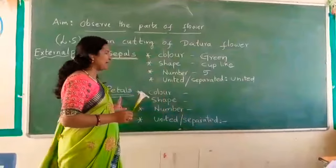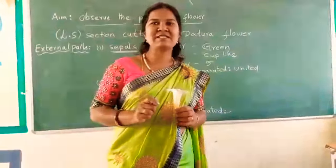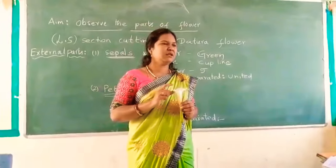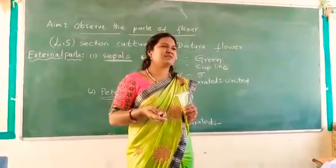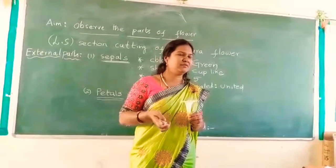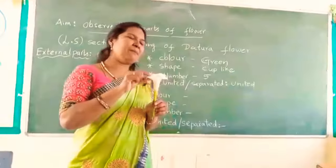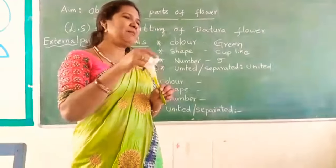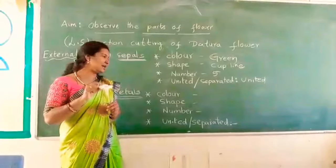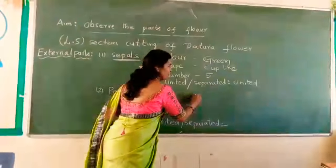And then, petals. What are the petals? Petals means the attractive part of the flower. Maybe they are in different colors — red, rose, white, whatever it may be. So in datura, these are the petals. First of all, color. What is the color of the petals? White.